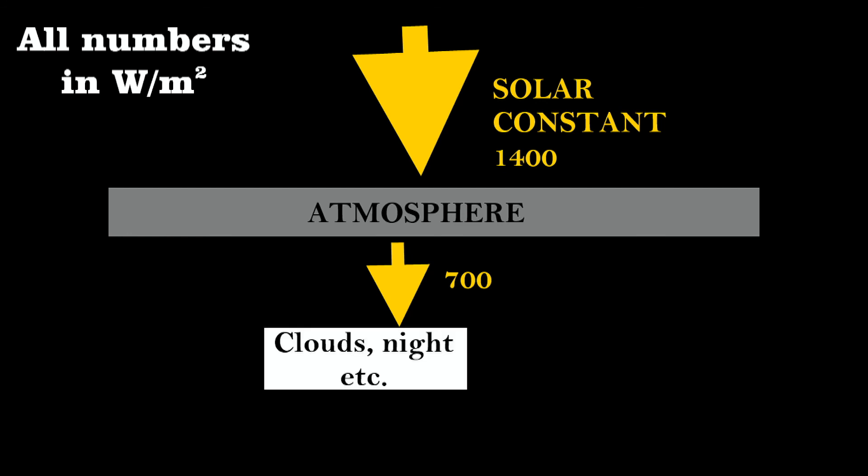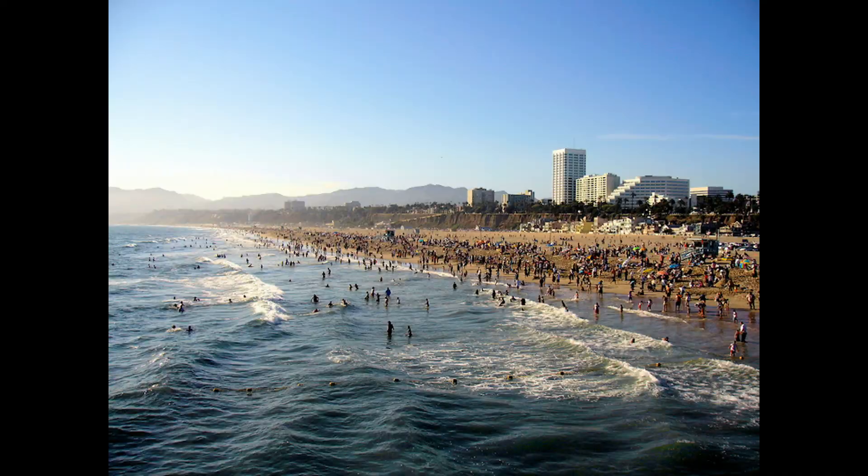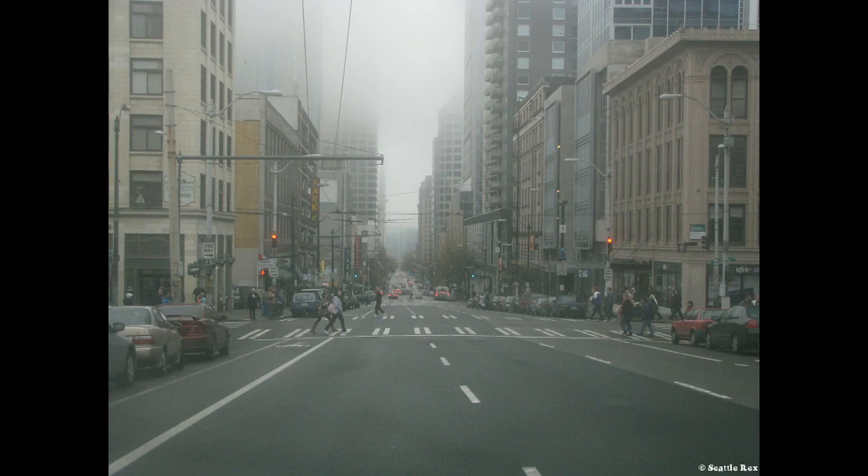But it isn't sunny all the time either. If we count for nights and cloudy days, you end up with only about 240 watts per meter squared. This is slightly higher for sunny places like LA and Arizona, but lower for places like Seattle and London.